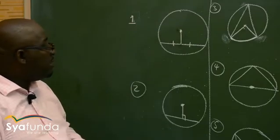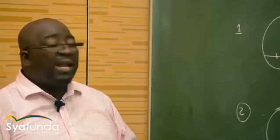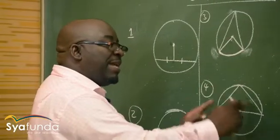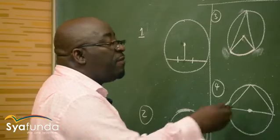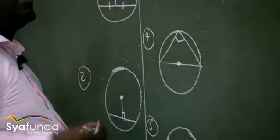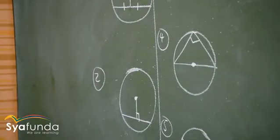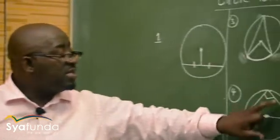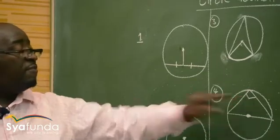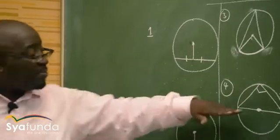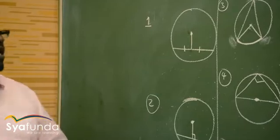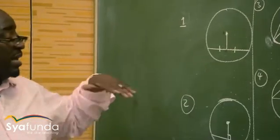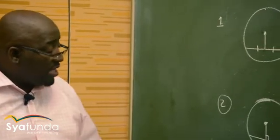Look at this other theorem. This theorem says the angle subtended by a diameter will always be equal to 90 degrees. The angle that is formed by a diameter at the circumference is always 90 degrees — this line will be perpendicular to the other one, forming 90 degrees. This must be a diameter — it should come through the center. We call these angles in the semicircle.